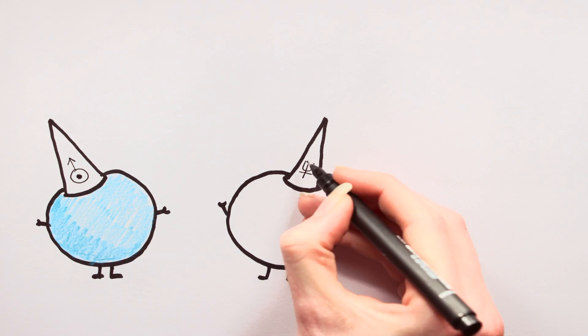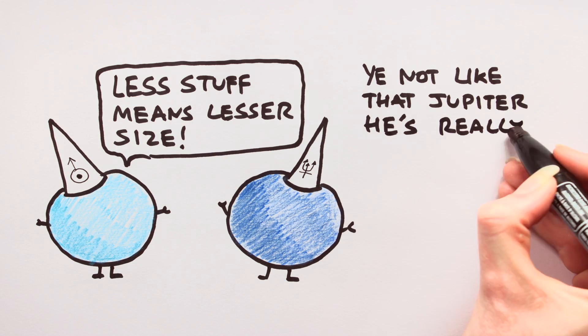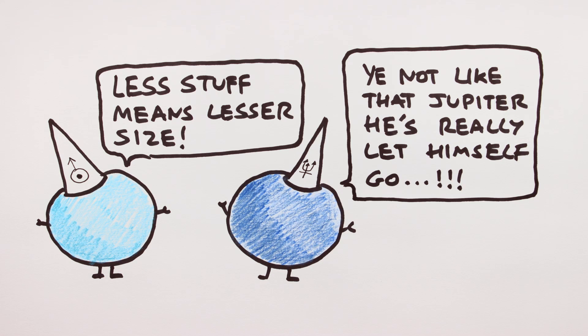Interestingly though, Uranus and Neptune are thought to have formed after the solar wind, because they contain much less hydrogen and helium than Jupiter or Saturn.